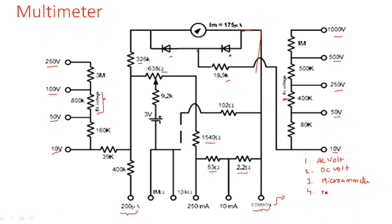The fourth section is the milli ammeter section. With 50 milli amperes and 10 milli amperes along with the common path, this forms the milli ammeter section. The fifth section is the ohmmeter. In the ohmmeter, a battery supply is required — and yes, a 3-volt battery is present. There is a 1 mega-ohm resistor range and a 10 kilo-ohm resistor range, along with a potentiometer, forming the ohmmeter section. These are the five different meters available in this multimeter.